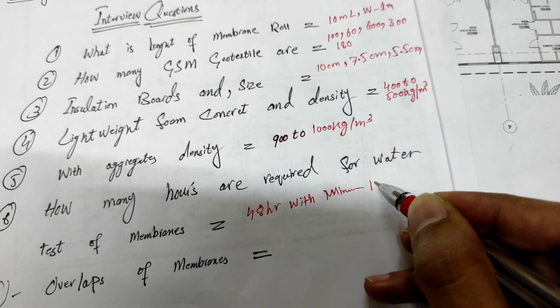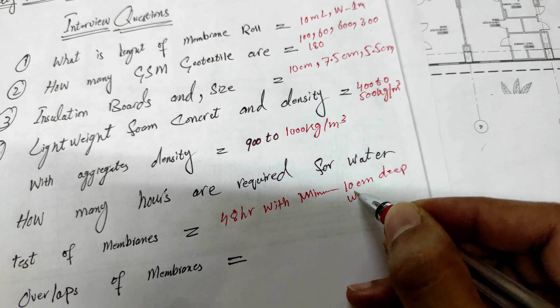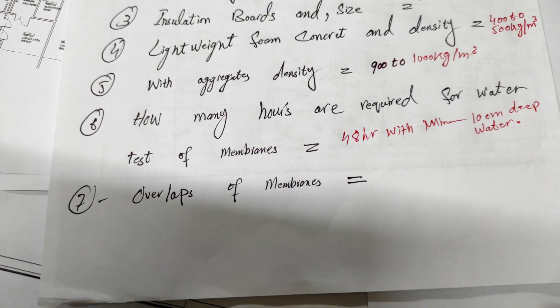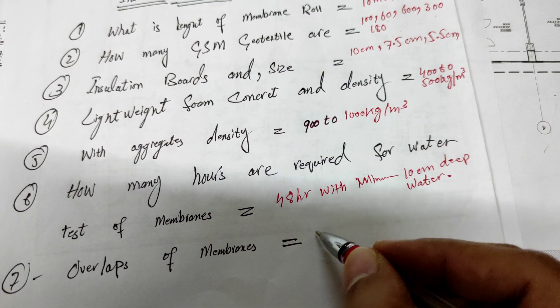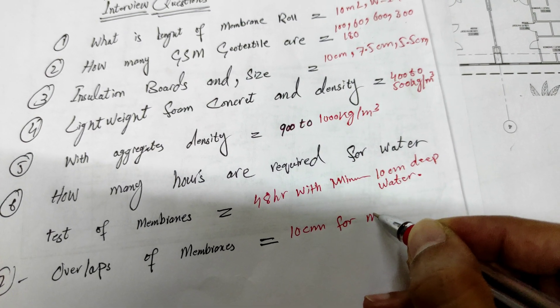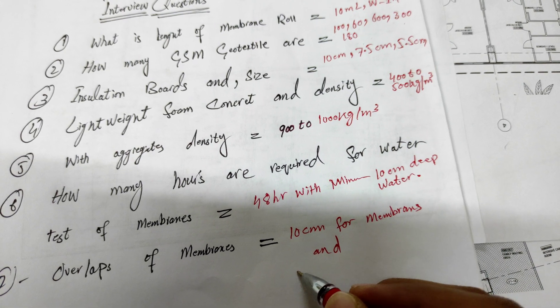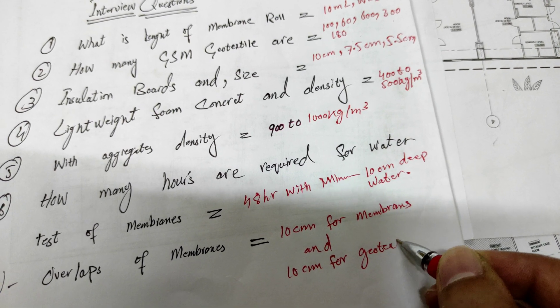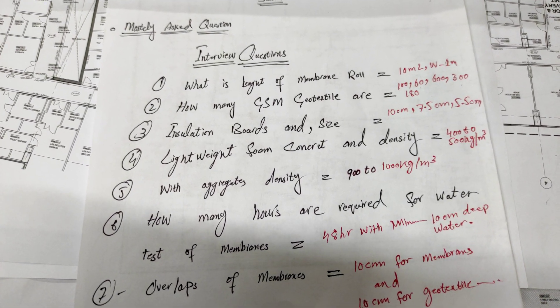The last question is overlap of membranes. What are the overlaps of membranes, how much? The answer is 10 centimeter for membranes and also 10 centimeter for geotextiles. These are the mostly asked questions during interview.